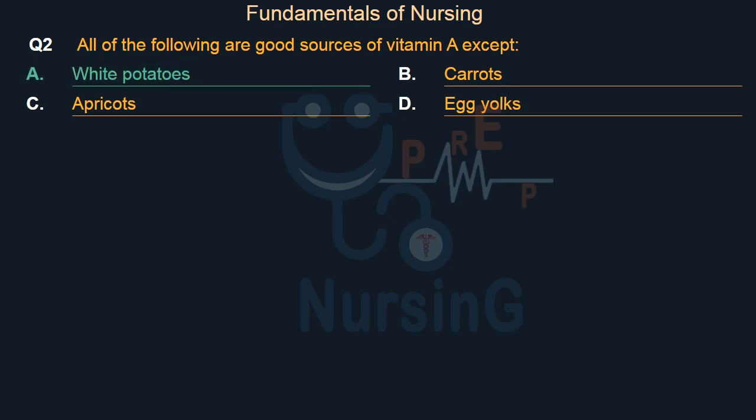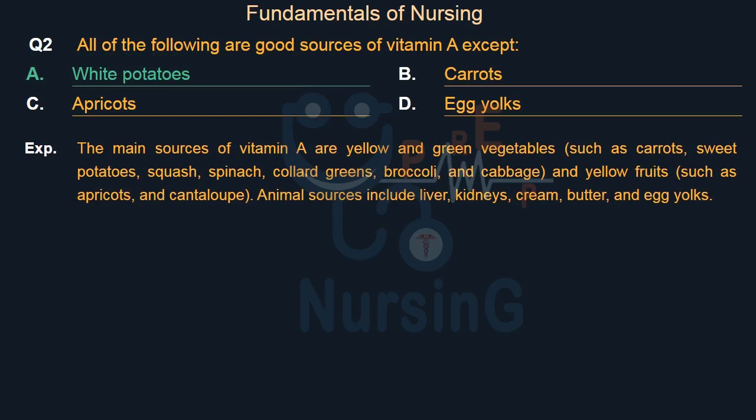The main sources of vitamin A are yellow and green vegetables, such as carrots, sweet potatoes, squash, spinach, collard greens, broccoli, and cabbage, and yellow fruits such as apricots and cantaloupe. Animal sources include liver, kidneys, cream, butter, and egg yolks.